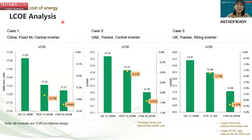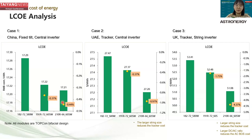We also conducted LCOE analysis in various scenarios to compare the three modules, all of which are TOPCon bifacial design. In the first case, the project is in China with a fixed-tilt tracking system and central inverter. In this case, the 210 rectangular and 191 rectangular provide similar LCOE values, but both are definitely better than the 182×72 module.